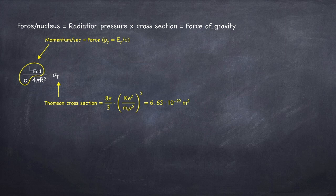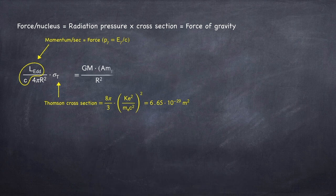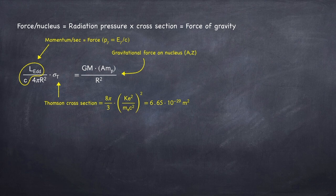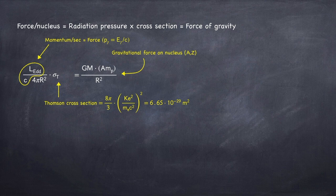Now we equate this to the gravitational force on a nucleus, with atomic number A and charge Z. This may be a little confusing, because the photons are scattering off electrons, but we're equating it to the gravitational force on a nucleus.